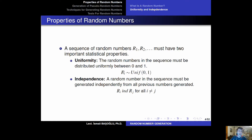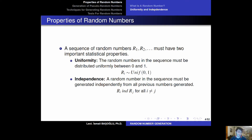A random number within the sequence must be uniformly distributed between zero and one — it must follow a continuous uniform distribution between zero and one. The independence property indicates that when you generate a random number, the next random number must be independent of all previous random numbers that are generated. Human mind is not very capable of performing that.